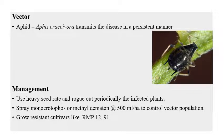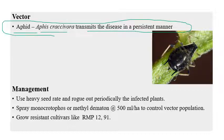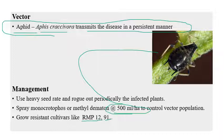Rosette virus is transmitted by the aphid Aphis craccivora in a persistent manner. Management includes using a heavy seed rate, roguing out infected plants periodically, and spraying monocrotophos or methyl demeton at 500 ml per hectare to control the aphid vector. Resistant cultivars RMP12 and 9-1 are available against this disease.